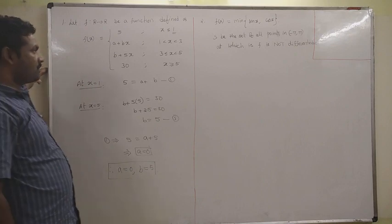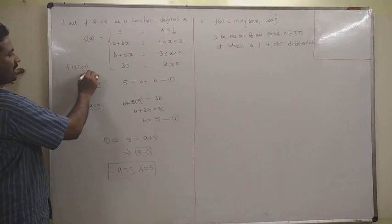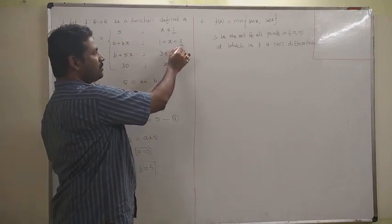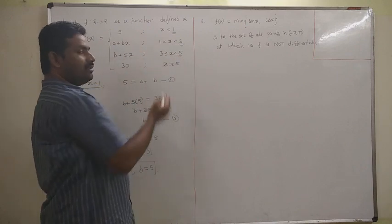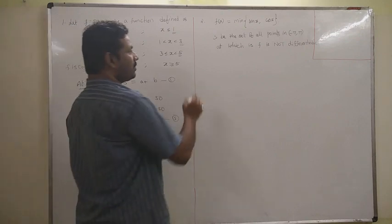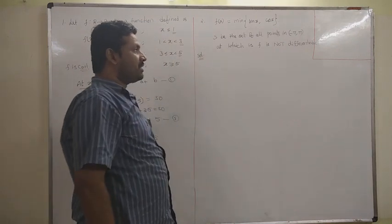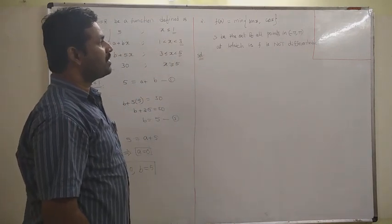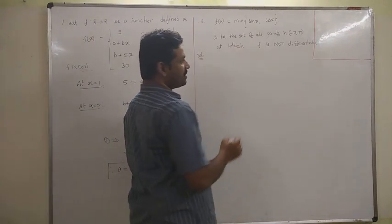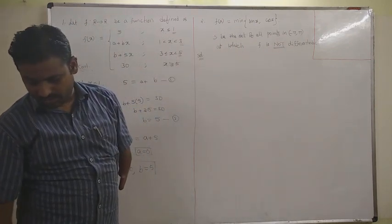So f is continuous with conditions a equal to 0 and b equal to 4. You can verify: at x equal to 1, x equal to 3, and x equal to 5, LHL equals RHL equals the function value. Now the next problem: f of x equal to minimum of sin x and cos x, for x from minus 5 to 5 — at which points is f not differentiable?